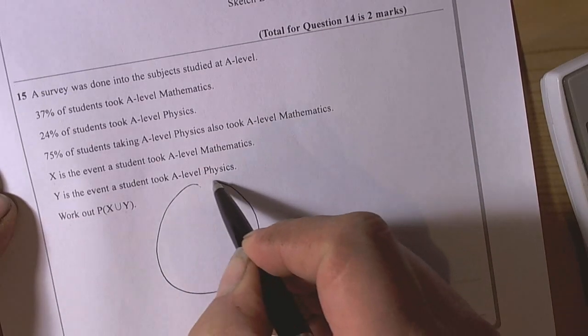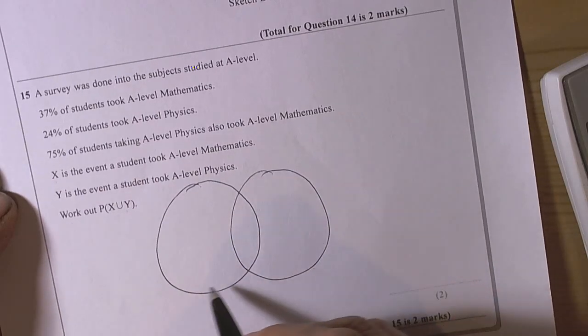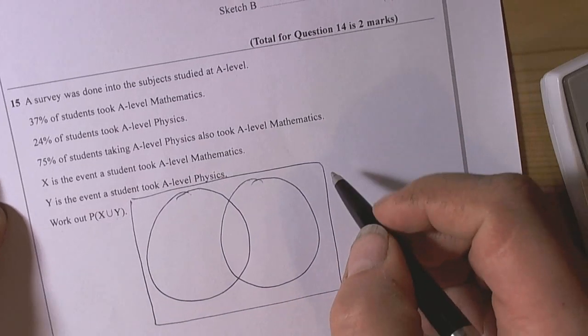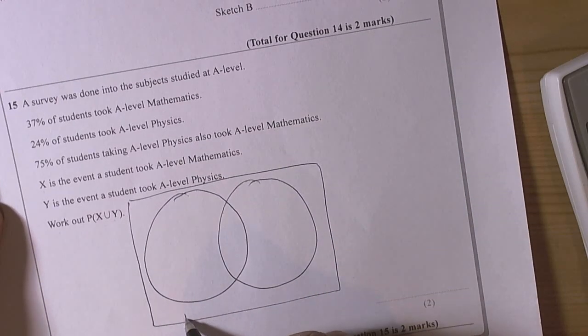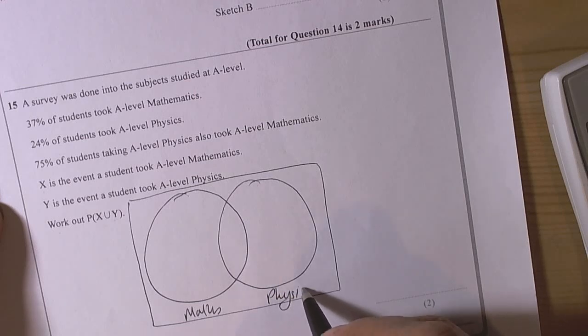So Venn diagram, we have two variables, two circles and we can see what's going on. So we call this one the maths and this one the physics.